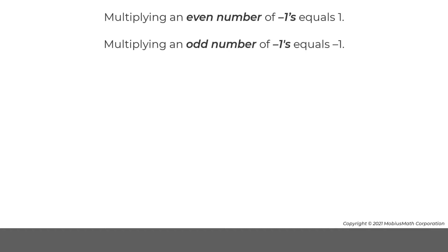Multiplying an even number of negative 1's equals 1. Multiplying an odd number of negative 1's equals negative 1. For example, multiplying negative 1 times negative 1 is the same as finding the opposite of negative 1. So, negative 1 times negative 1 equals 1.